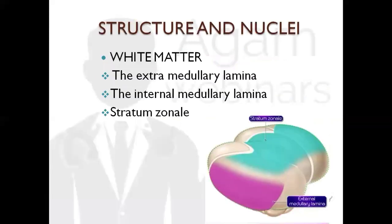Moving on to its structure and nuclei: the thalamus consists of white matter and gray matter. The white matter consists of three things. First, the external medullary lamina, which is a thin sheet of white matter covering the lateral surface of the thalamus. Next is the internal medullary lamina, a Y-shaped structure which actually divides the gray matter of thalamus into various nuclei. Next is the stratum zonale, a thin sheet of white matter covering the dorsal or superior surface of the thalamus.